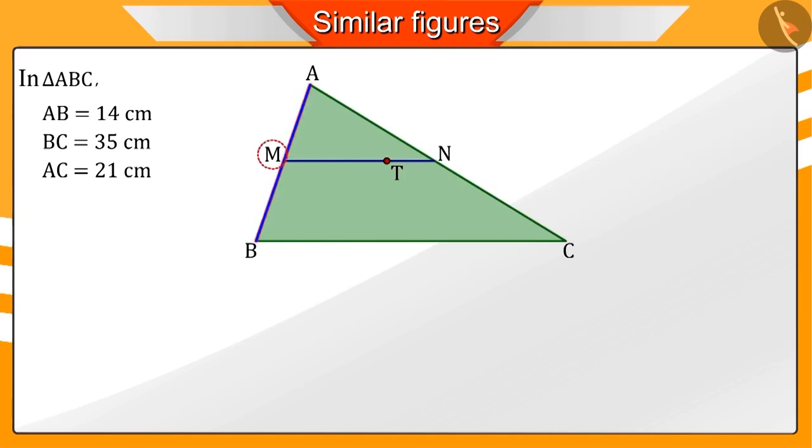Point M divides the side AB into two parts AM and MB, and point N divides the side AC into two parts AN and NC.